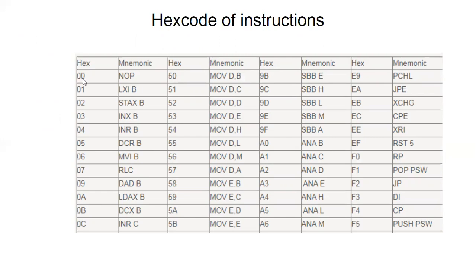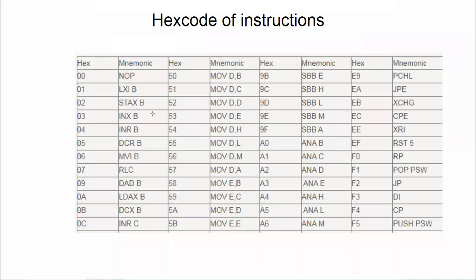If the hex code is 00, the mnemonic is NOP — no operation. Then 01 means LXIB — load immediate. INR B means increment the data in the B register by one. After execution of INR B, if the B register has value 10, then the B register will have value 11.